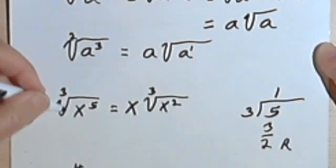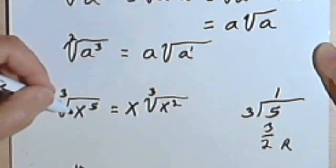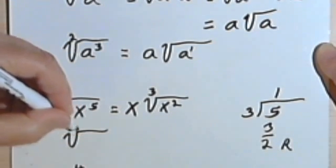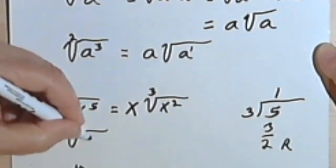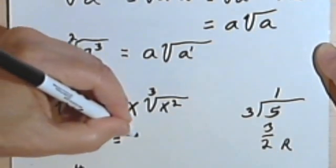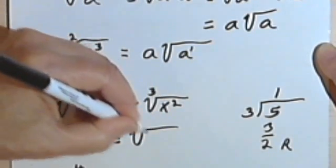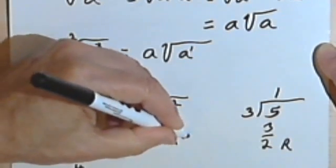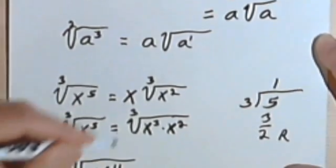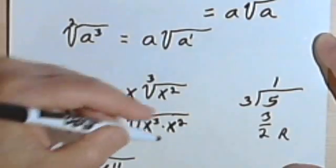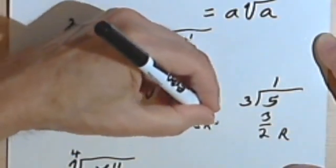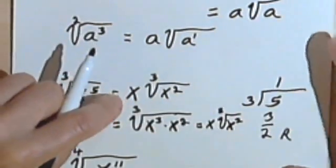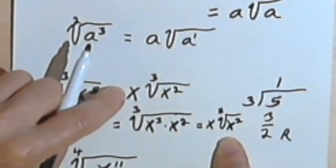If I wanted to think of this in a slightly longer way where you can actually see what's happening: the third root of x to the fifth is the same as the third root of x to the third times x squared. Since I can take the third root of x to the third, that gives me x times the third root of x squared. I get the same answer both ways.